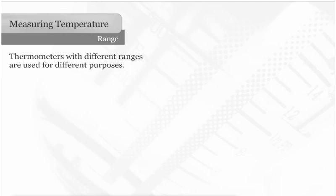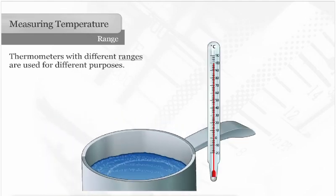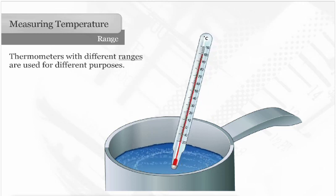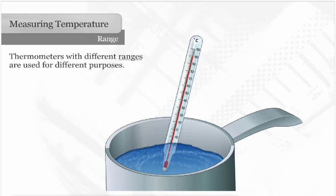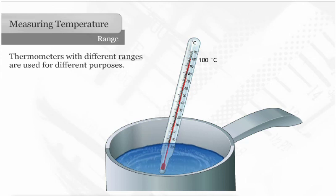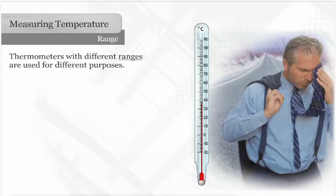Thermometers have different ranges so that they can be used for different tasks. For example, water boils at 100 degrees Celsius. The outdoor air temperature could never reach that temperature, therefore you would not need a thermometer that reaches 100 degrees Celsius as you would for measuring boiling water.